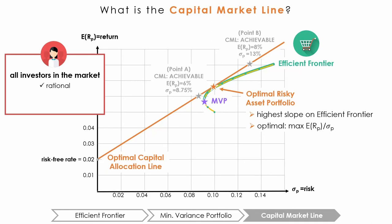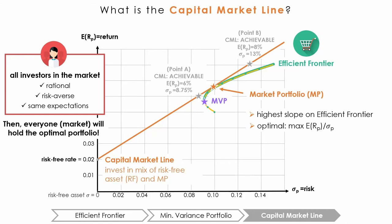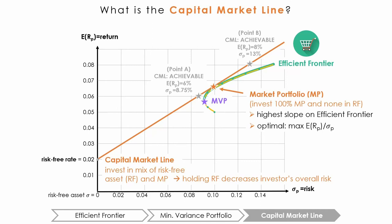Assuming that all investors in the market are rational, risk-averse, and have the same expectations of risk and return, then the optimal capital allocation line becomes the capital market line, and the optimal risky asset portfolio becomes the market portfolio. Any point on this capital market line can be achieved through investing in a mix of risk-free assets and the market portfolio. Because the variance of the risk-free asset is zero, when we combine it with the risky asset, our risk decreases proportionally. Take point A for example: it can be achieved through investing approximately 90% in the market portfolio and 10% in the risk-free asset. This yields a standard deviation of 9% and an expected return of 6%, which is the same we could expect at point C on the efficient frontier, but with lower risk.